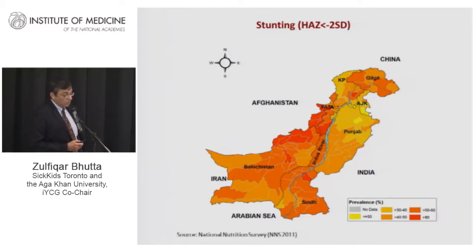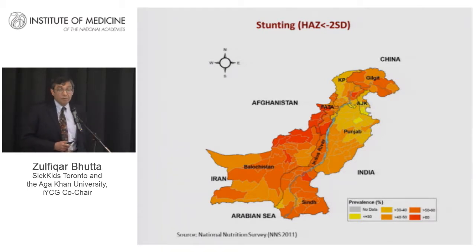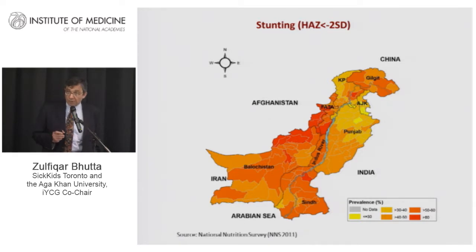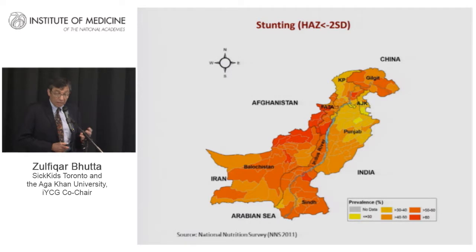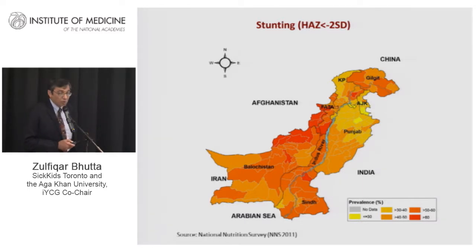The same is true of the distribution of nutrition as a risk factor for adverse outcomes. I'm deliberately showing this graphic to make the case for why it is so important to integrate nutrition within health and developmental interventions in Pakistan, and the reason for the government moving into a program that could reach the poor in remote parts of the country.